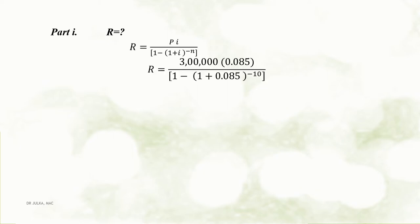Part 1: Here we want to calculate capital R, amount of installment. The periodical installment denoted by capital R is calculated using the formula P multiplied by i, the whole divided by 1 minus (1 plus i) raised to the power minus n. Putting P = 3 lakh, i = 0.085, and n = 10, after calculation we get the value of Rs 45,722.31.